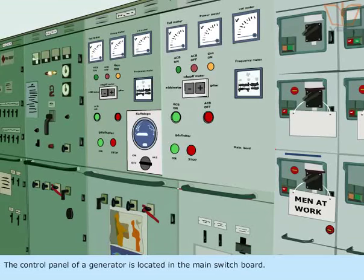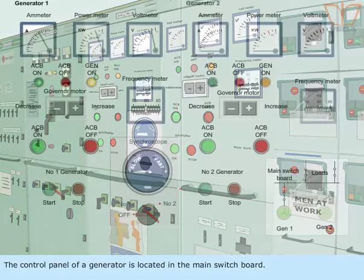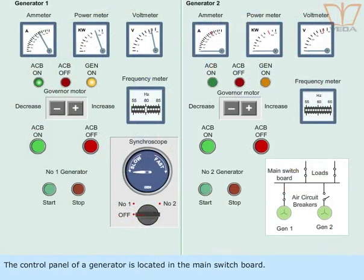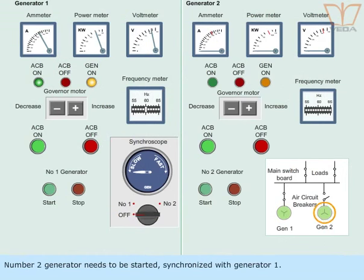The control panel of a generator is located in the main switchboard. Assume that number 1 generator is running on load. Number 2 generator needs to be started and synchronized with generator 1.